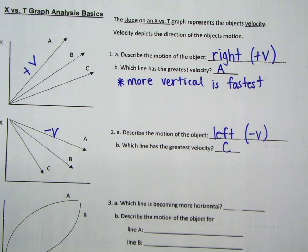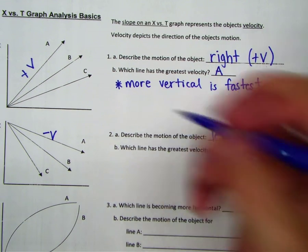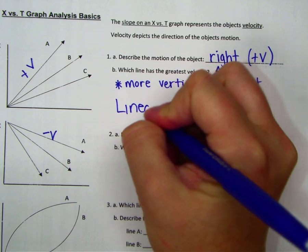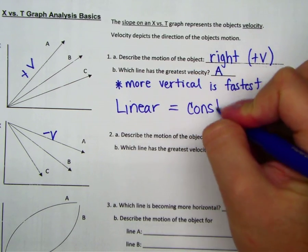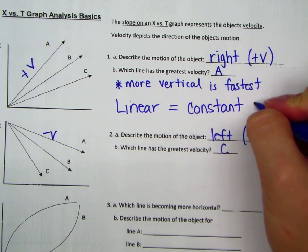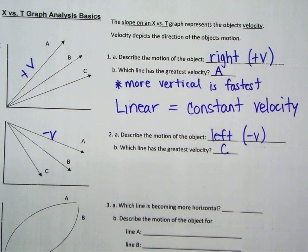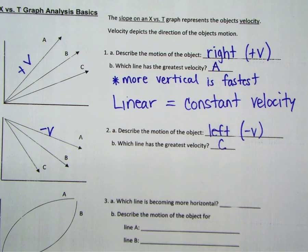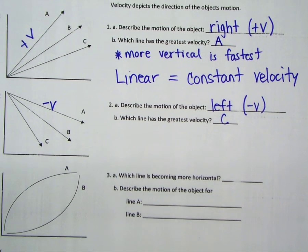Now, if you have a linear representation, please make sure you understand that linear means we have a constant velocity. It is not speeding up. It is not slowing down. It maintains the same velocity the entire trip.